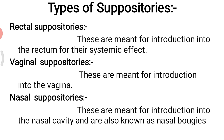First, rectal suppositories. These are meant for introduction into the rectum for systemic effect. These are generally made from theobroma oil and are available in various sizes to meet the needs of infants, children, and adults. Rectal suppositories are usually available in weight about one to two grams.